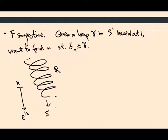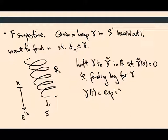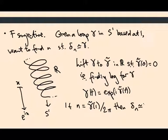So we're going to take this covering map and I'm going to lift gamma to some gamma tilde in R such that gamma tilde of 0 is 0. What does that mean? I.e. I'm finding a logarithm for gamma. So if I do gamma of t that's the same as doing exp i gamma tilde of t. I can do that by path lifting. I've got a unique gamma tilde. And I'm going to say that if n equals gamma tilde of 1 divided by 2 pi then delta n is homotopic to gamma. This is the claim.